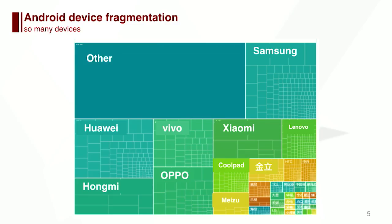Another issue is Android device fragmentation. Because Android system is open source and OEMs can customize their own Android phones. You can see Samsung, Huawei, Xiaomi each have dozens of Android models. Each model has different screen resolution, different system APIs, or even graphics drivers. In NetEase Games, we usually need to test on over 200 Android phones before releasing a game.